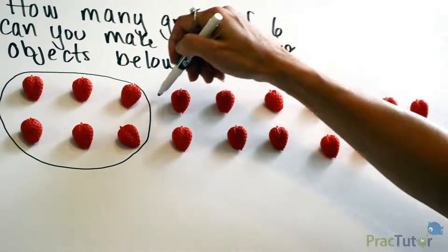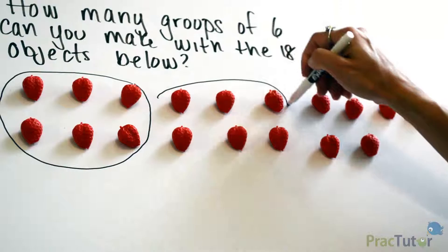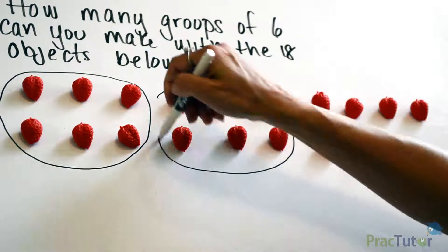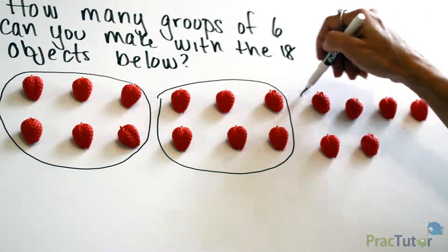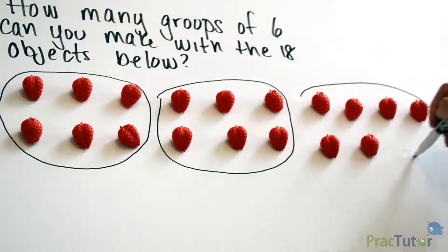We have a second group that we can create. We're going to circle these 6 strawberries. And we have a third group that we can create using the 6 strawberries left over.